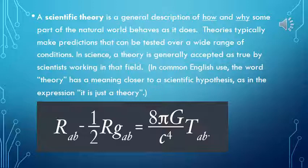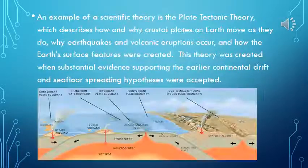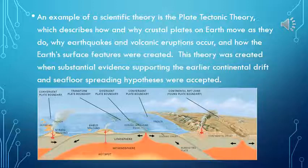In common English use, the word 'theory' has a meaning closer to a scientific hypothesis, as in the expression 'it is just a theory.' An example of a scientific theory is the plate tectonic theory, which describes how and why crustal plates on Earth move, why earthquakes and volcanic eruptions occur, and how the Earth's surface features were created. This theory was created when substantial evidence supporting the earlier continental drift and seafloor spreading hypotheses were accepted.